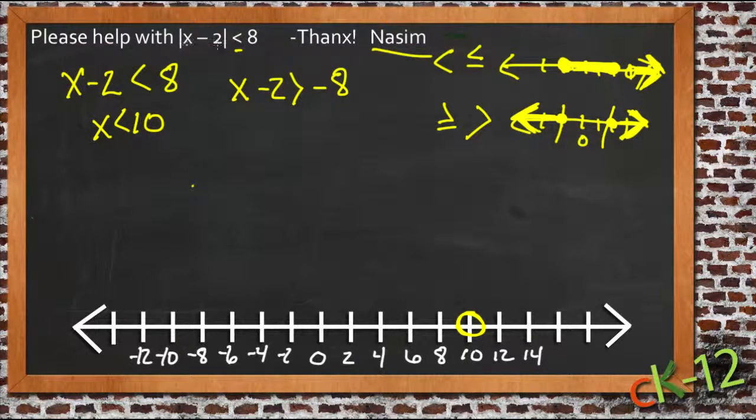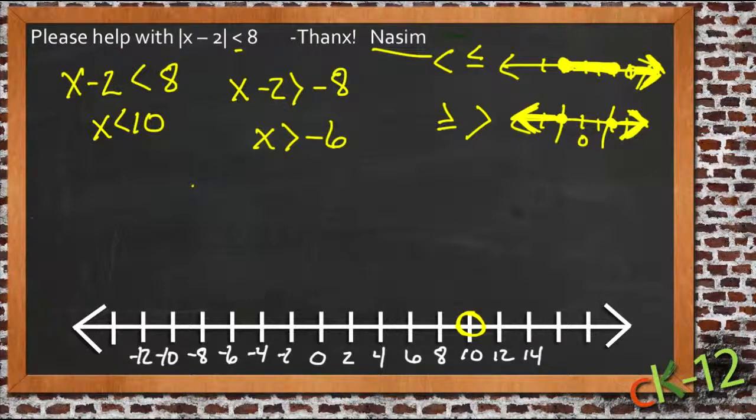So the other possibility is that X minus 2 needs to still be bigger than negative 8. So it can't be smaller than, I mean it has to be smaller than 8, but it has to be less negative or bigger than negative 8. So if we solve this inequality here, we get X is greater than negative 6.